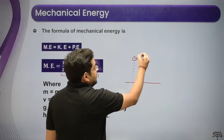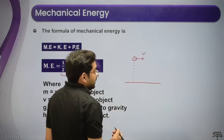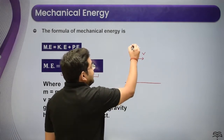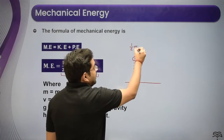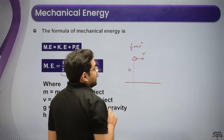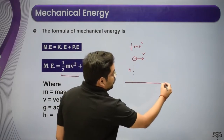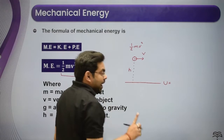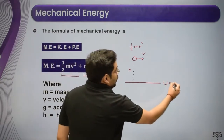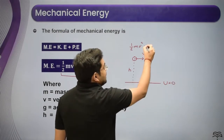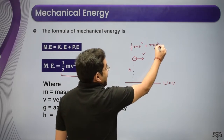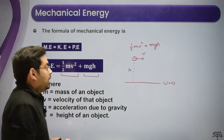Suppose there is a body moving with speed v at some instant. The total mechanical energy is half mv². If height is h, and we assume ground level as reference, then potential energy at ground is zero. So we can write potential energy as mgh.